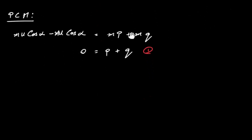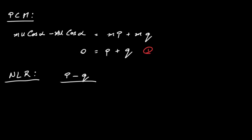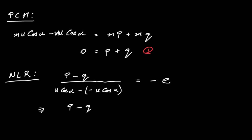Using Newton's Law of Restitution: (relative velocity after)/(relative velocity before) = -E. So (P - Q)/(U cos(α) - (-U cos(α))) = -E. The denominator is 2U cos(α), so multiplying across gives P - Q = -2EU cos(α). This is equation 2.